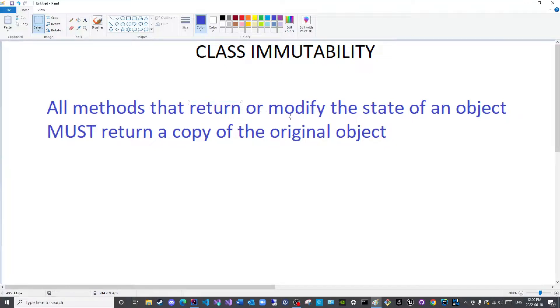So I just wanted to correct that to avoid any confusion. Any method that returns, that has a return value or can be used to modify the state of an object through method chaining as you have seen in the previous episode must return a copy of the original object.